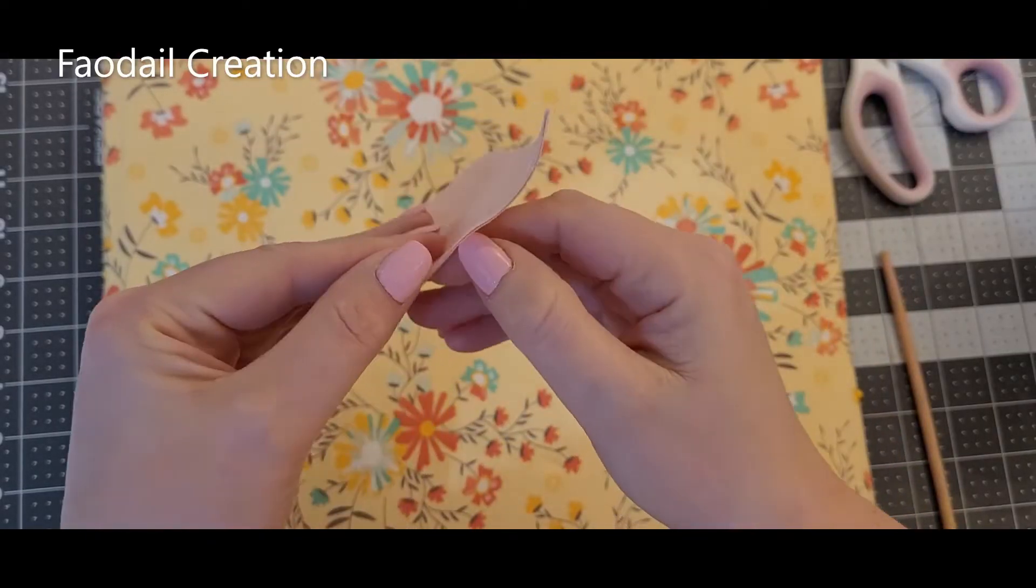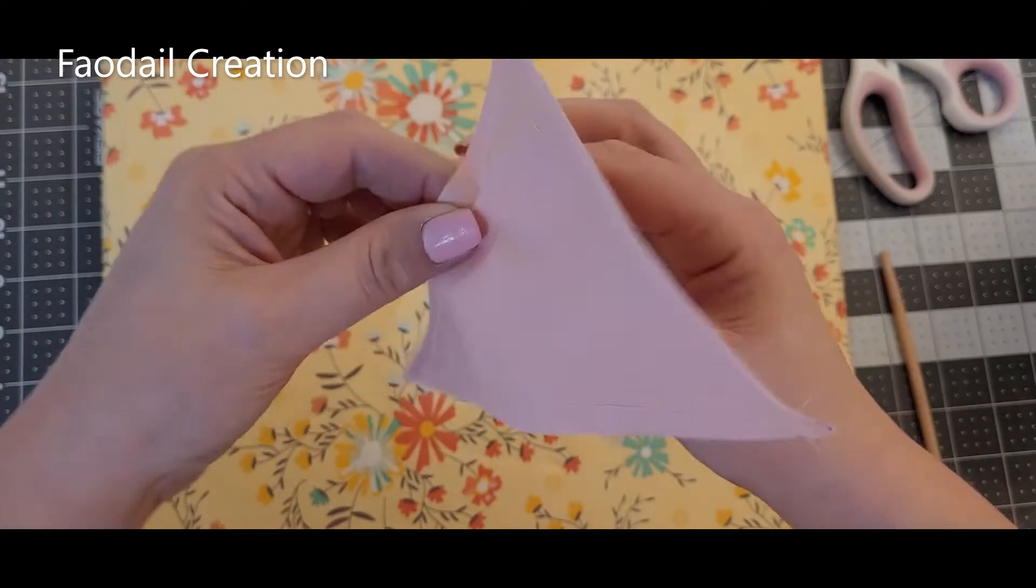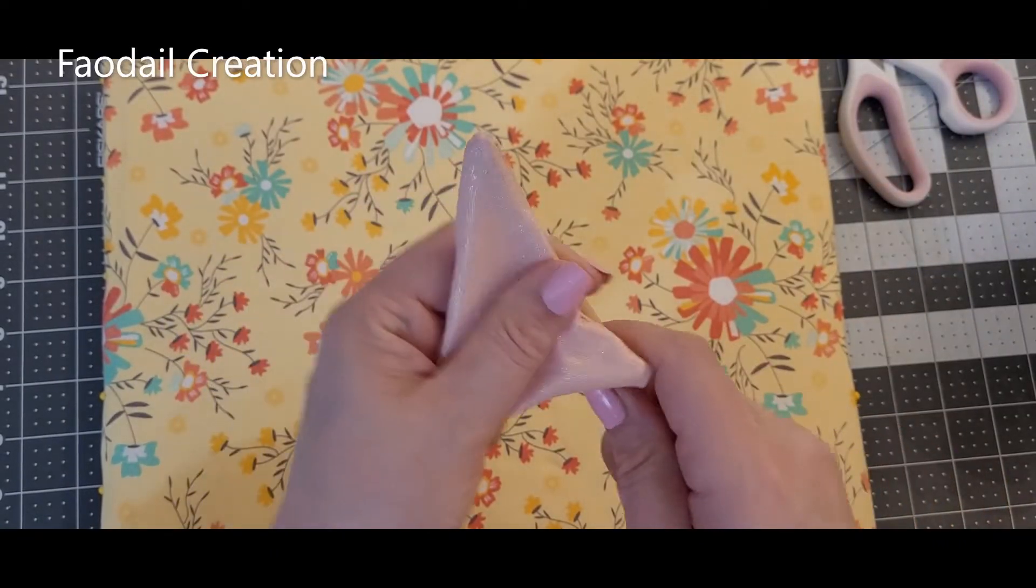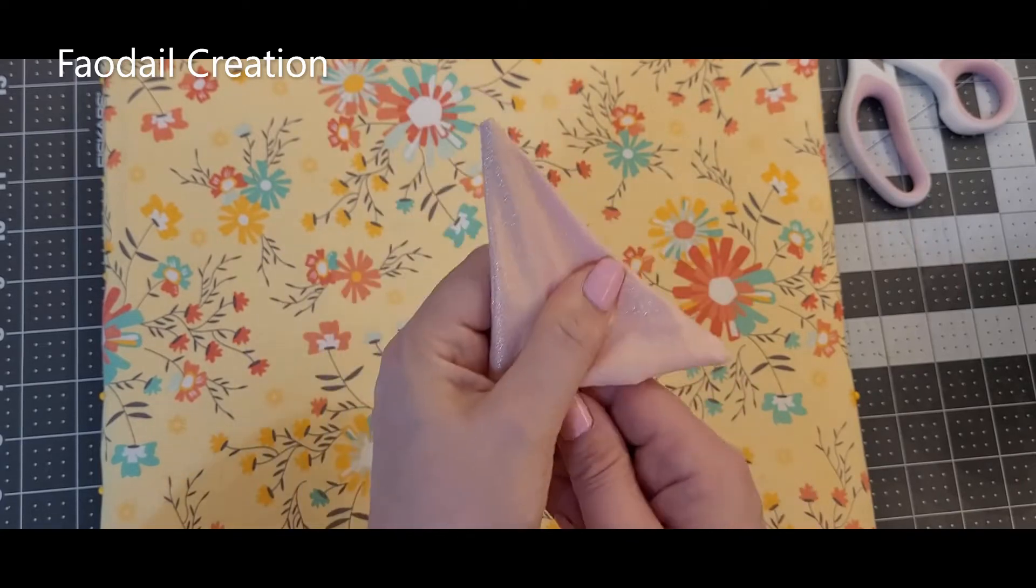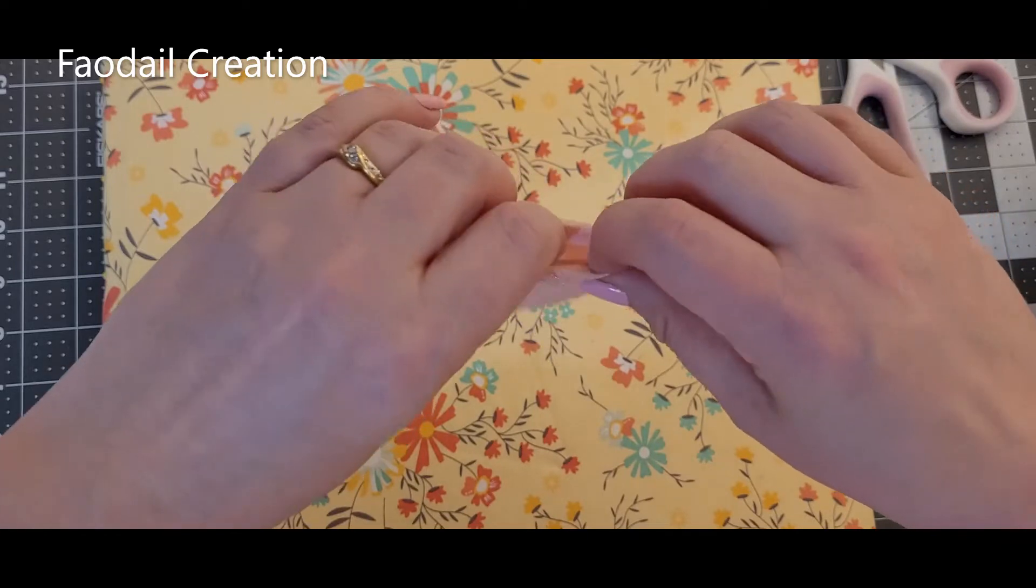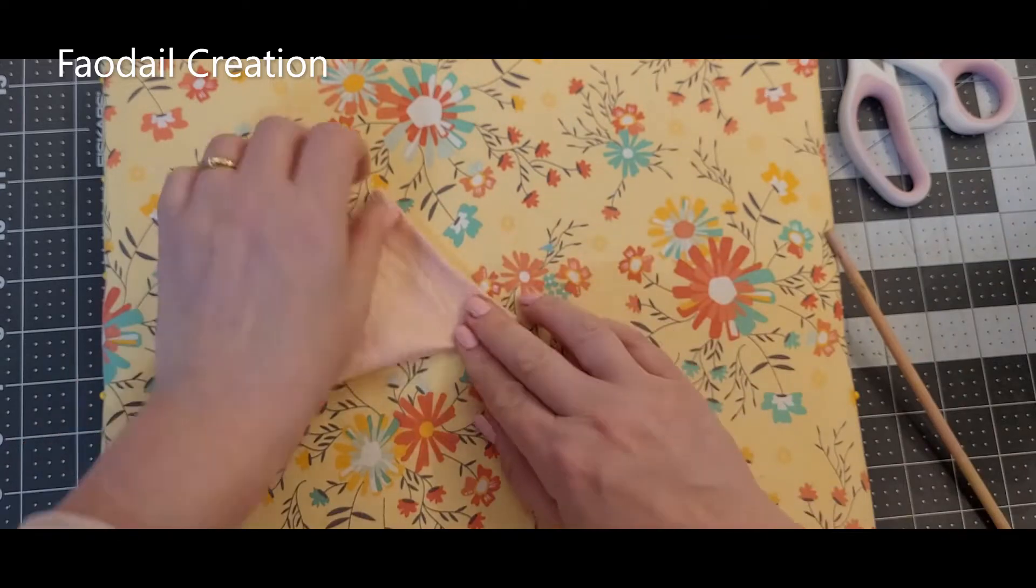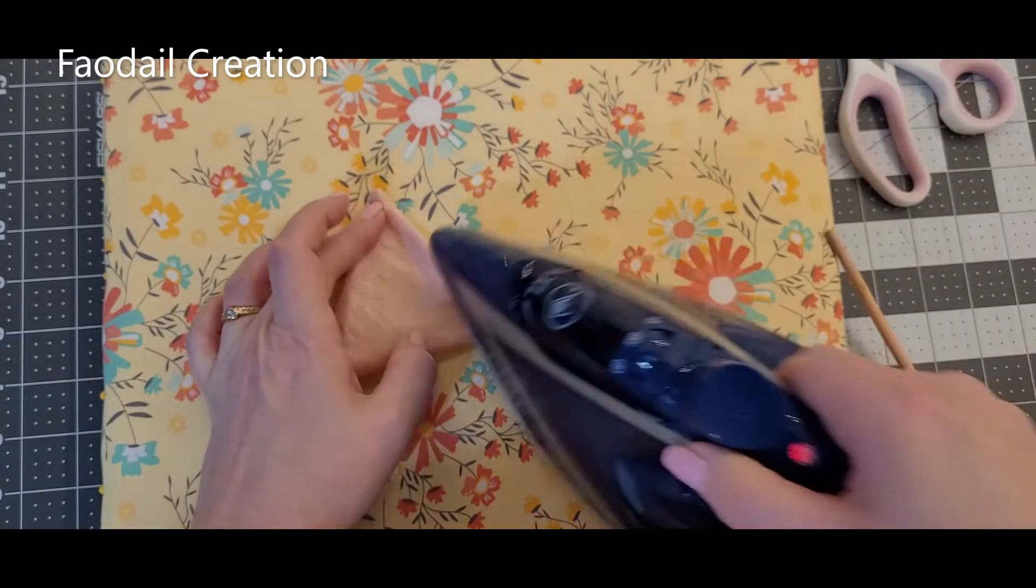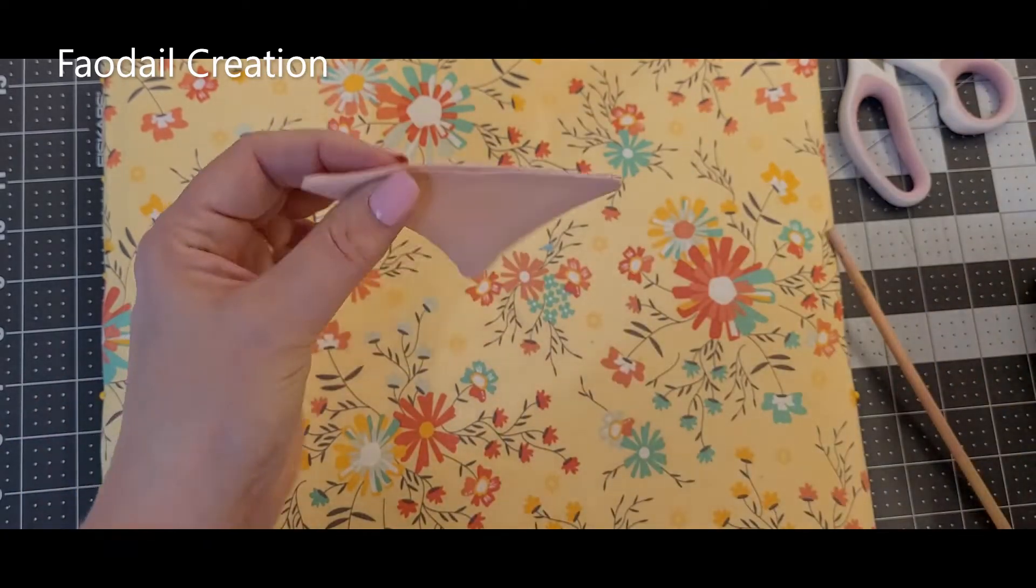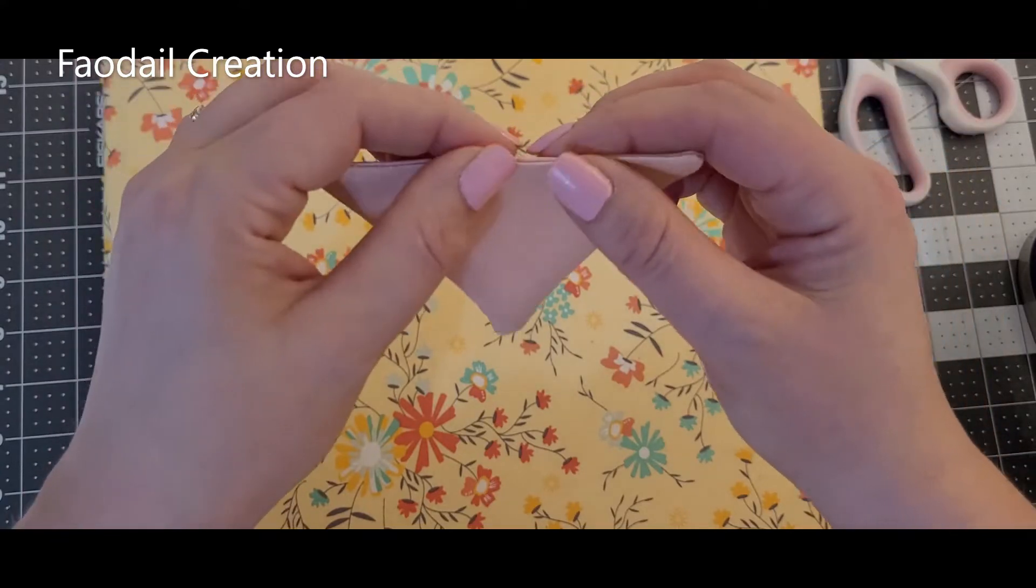Once you have everything sewn together, you're going to turn everything right sides out. So where we left that opening, you're going to pull everything through and very gently poke them corners through. And then what I like to do is fold this opening over so it's all nice, and then just press it. So that opening is now nice and flat, so when we want to sew it in a minute, it's going to be nice to join together.